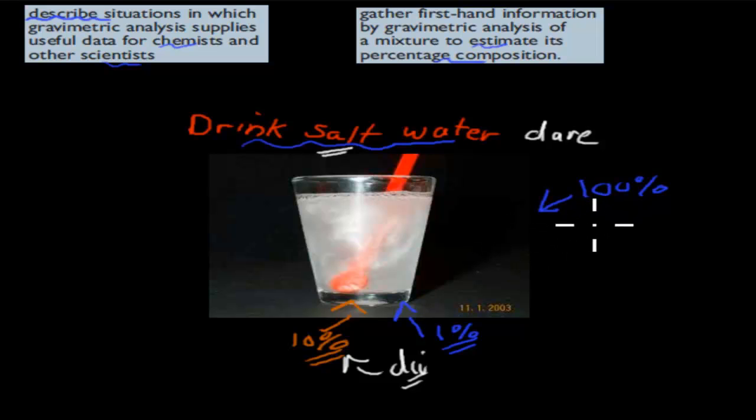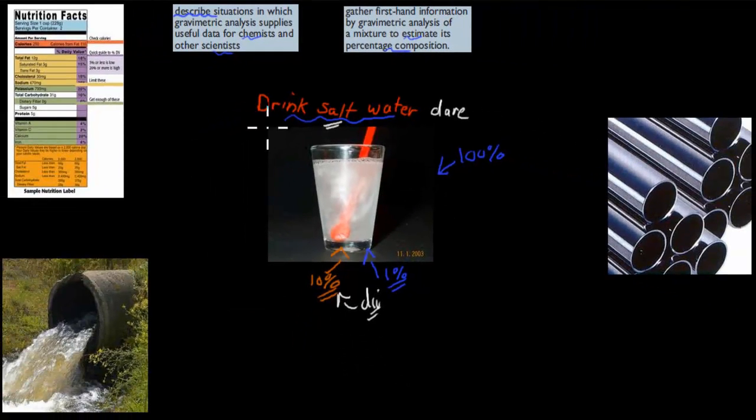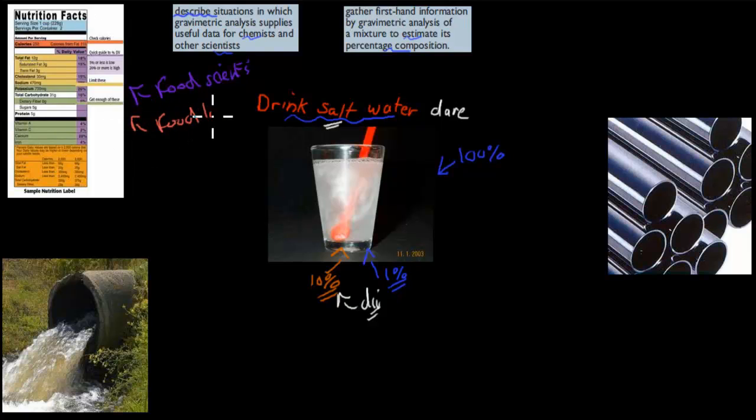But in other ways, we also have to do it for different reasons. So for example, this was a theoretical unlikely scenario, but these are actual ways we use it, the ones I'm going to mention now. So for example, a food scientist would use it to find out how much, in terms of the protein. So you've seen, this is a food label here.